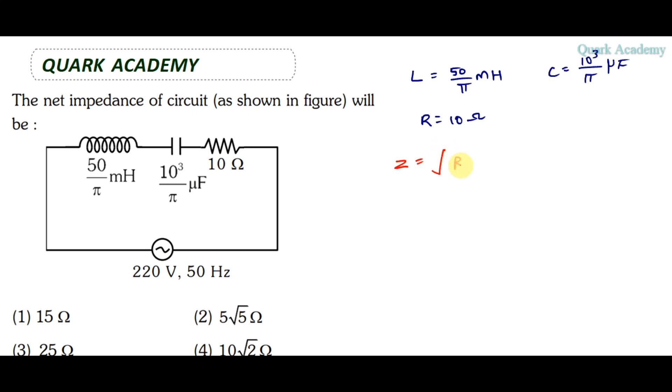The impedance expression is the root of R² plus (XL minus XC)² where XL is the impedance due to the inductor and XC is the impedance due to capacitance. XL equals ωL and XC equals 1 by ωC, where ω is the angular frequency. The angular frequency is 2πf, so f is 50 hertz.